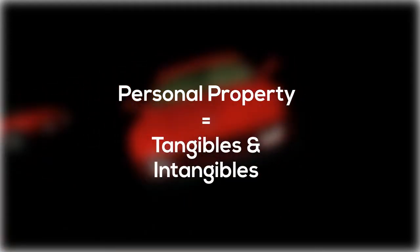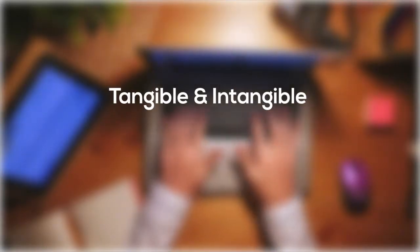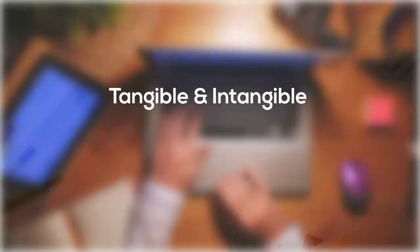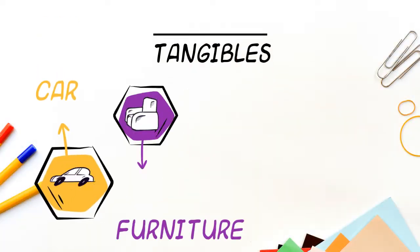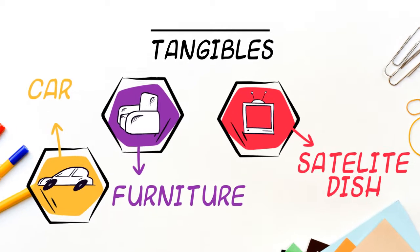Next we will discuss tangible and intangible. Personal property can be categorized as tangible or intangible. Tangible personal property refers to things that you can see and touch. Your car, furniture, and satellite dish are all examples of tangibles.